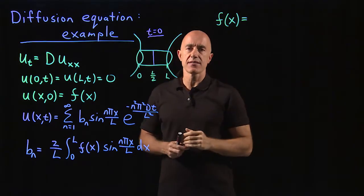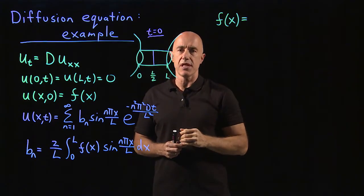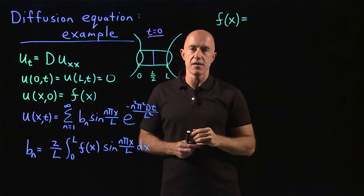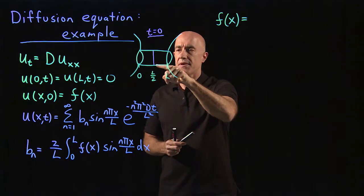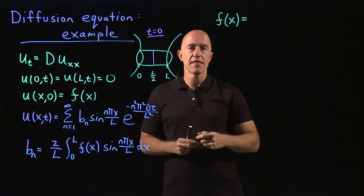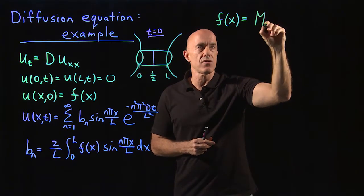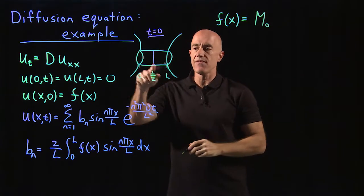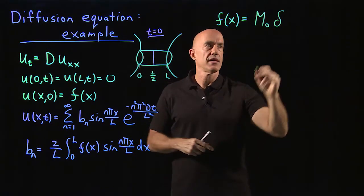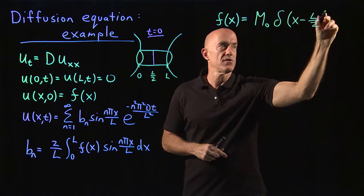But the dye has some mass. So the concentration is the mass per unit length. So that if we integrate over the length of the pipe, we should have some mass. We can call that mass M zero. So this is some function that when you integrate over the length, you get a mass of M zero. But it's zero everywhere except that L over two. So the way to model this is by our Dirac delta function centered at L over two.